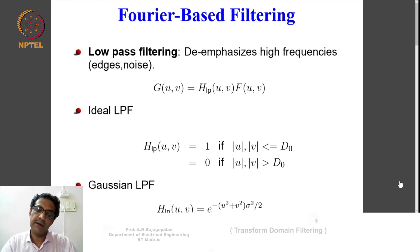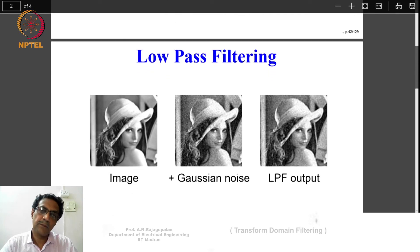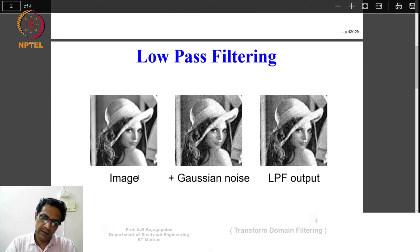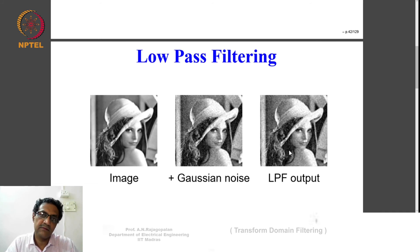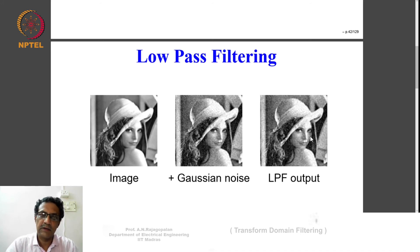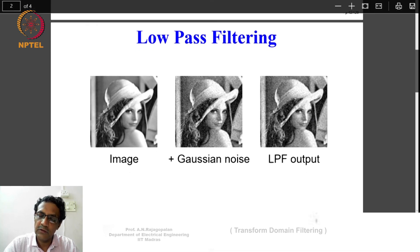Here are some transform-based filtering examples — we call this generalized linear filtering. The first example is low-pass filtering in the Fourier domain. You have an original image, then the image with added Gaussian noise, and when you do low-pass filtering in the Fourier domain you get a result where the noise level has come down. However, the image has also become a little blurred, which is natural to expect — this is why spatial filtering techniques such as NLM and bilateral filter are far more effective.